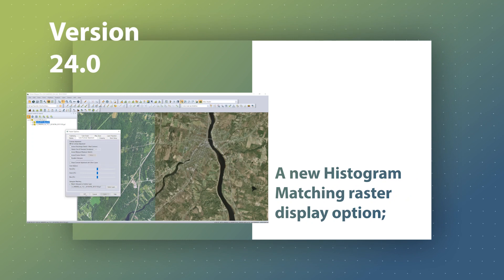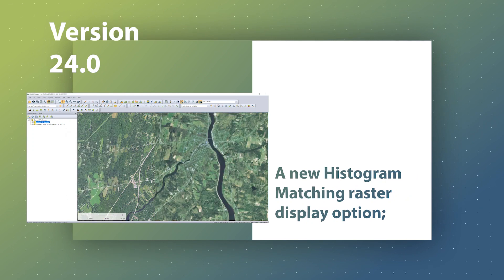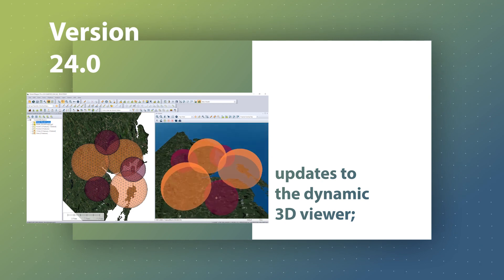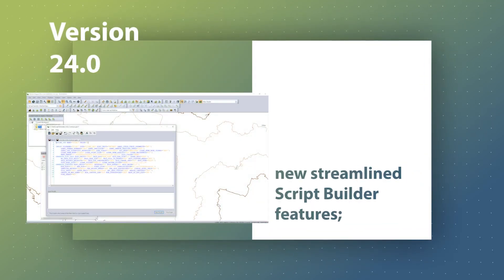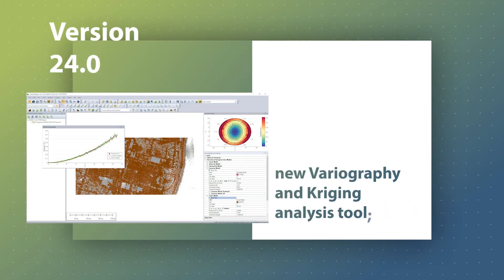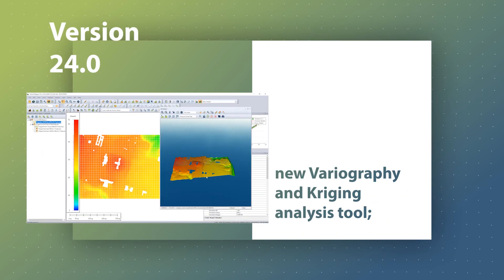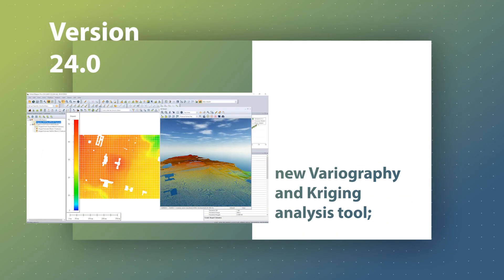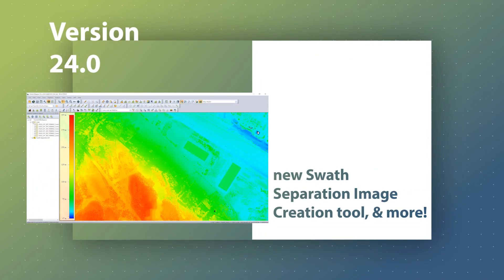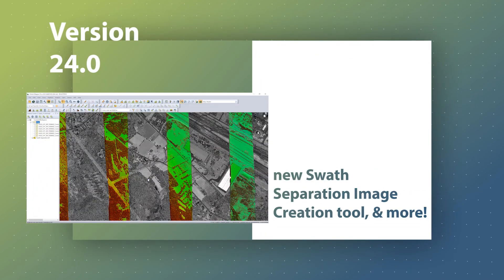Including a new histogram matching raster display option, updates to the dynamic 3D viewer, streamlined Global Mapper script creation with the new script builder, improved data prediction with the new data exploration variography and Kriging analysis tool, and a new swath separation image creation tool.